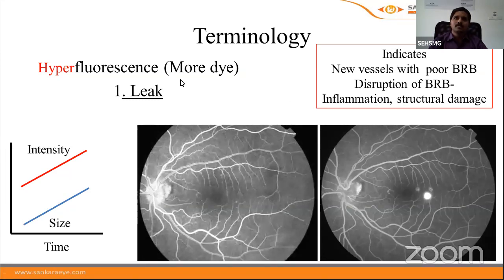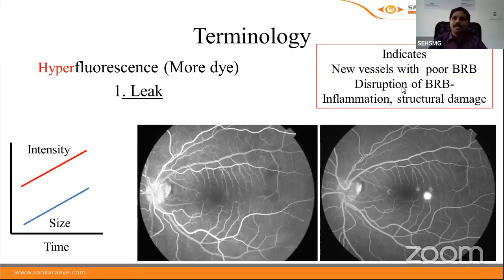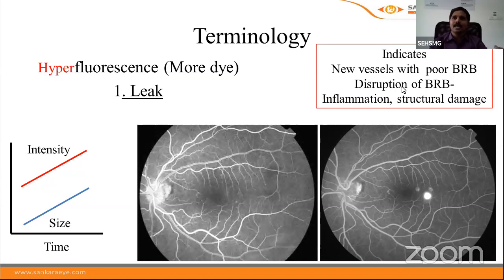Leak is characterized by an increase in both intensity and size of hyperfluorescence over time. We see an area of hyperfluorescence that is tiny initially, but as time progresses, both the size and intensity increase. This indicates either a new vessel with poor blood-retinal barrier allowing dye to extravasate into tissue, or a disruption of the blood-retinal barrier due to inflammation or structural damage. The fluorescent dye is normally localized to retinal and choroidal vessels and doesn't leak into tissue except at the choriocapillaries.